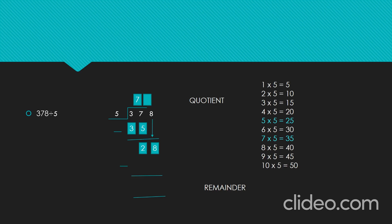Bring down 8. Let's divide 28 by 5. By using the tables of 5, we get the product nearest to 28, which is 25 — that is, 5 five's are 25. So, let's write 5 in the ones place of the quotient and 25 below 28. Let's subtract 25 from 28 — that is, 28 minus 25 gives 3. Here, our quotient is 75 and remainder is 3.